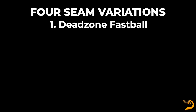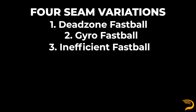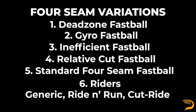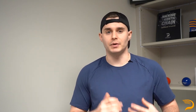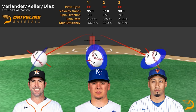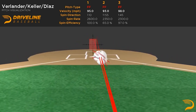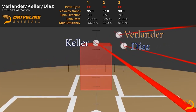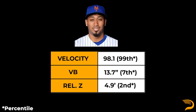The four-seam movement buckets we've noted for this video are: the dead zone fastball, the gyro fastball, the inefficient fastball, the relative cut fastball, the standard four-seam fastball, and the rider variants — the generic rider, the ride and run, and the cut-ride heater. To visualize the different four-seam profiles across the league, let's look at classified four-seamers from Justin Verlander, Brad Kelleher, and Edwin Diaz. In this series, we reclassify Verlander's four-seamer as a ride and run fastball, Kelleher's as a relative cut fastball, and Edwin Diaz's as a dead zone fastball. Diaz is a great example of a pitcher who does this from a low release site, but for the contents of this video, we will consider his fastball a dead zone.